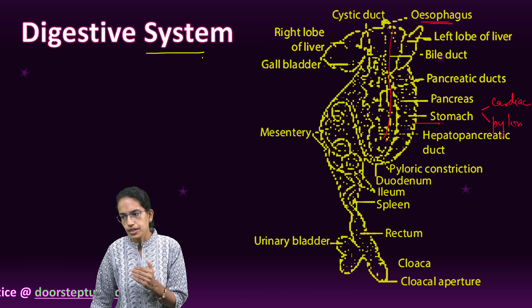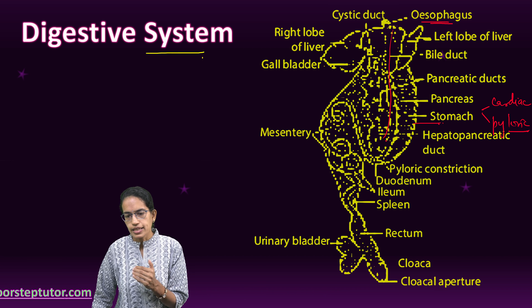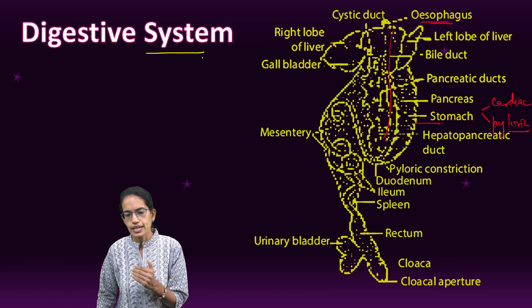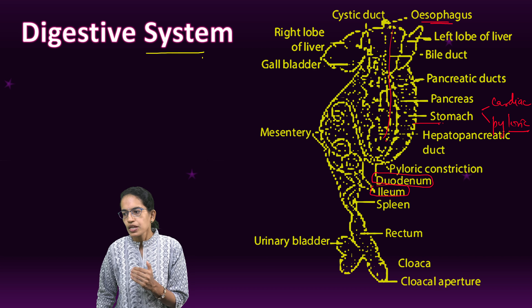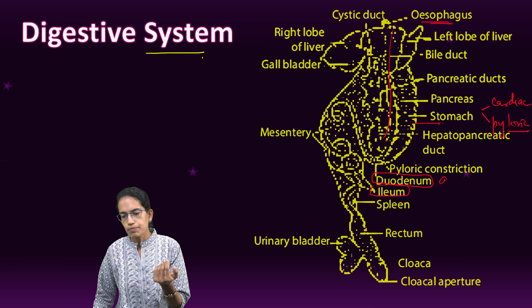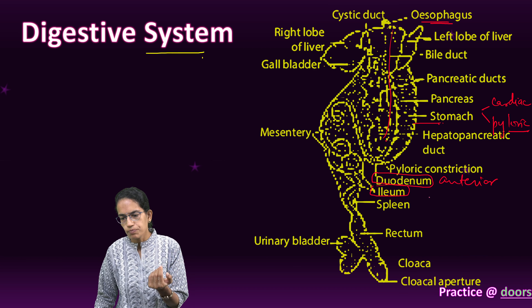This stomach is divided into two: the cardiac stomach and the pyloric stomach. Then there is a small intestine which is divided into duodenum and ileum.